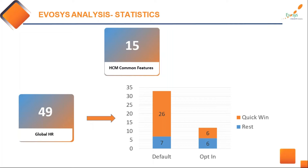With respect to Global HR, there are around 49 features introduced as part of 20d, but from our impact analysis, around 26 items are default and 6 are opt-ins. This doesn't mean the other features aren't beneficial, but the focus here is to highlight items that need less configuration and less testing time, because you only have a two-week time frame to enable and test them. In this webinar, we'll look only at the quick win features.